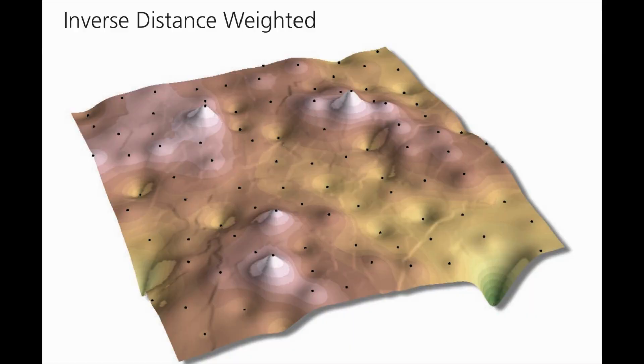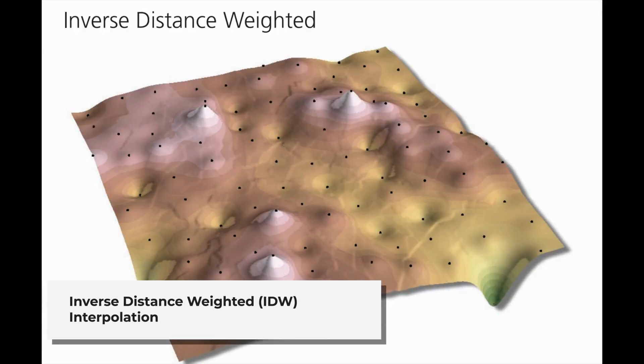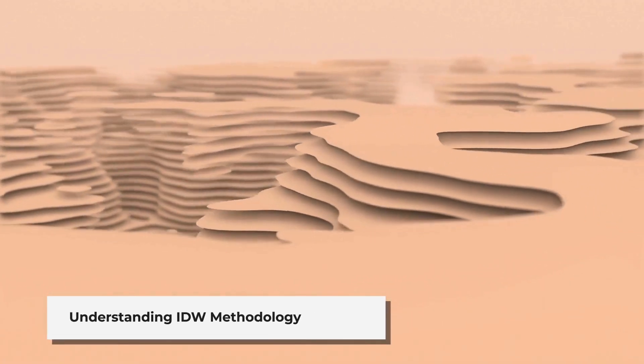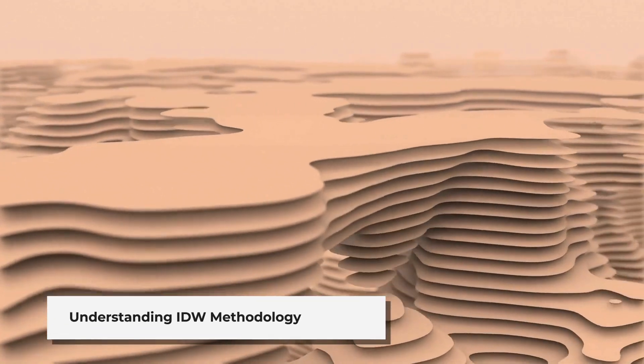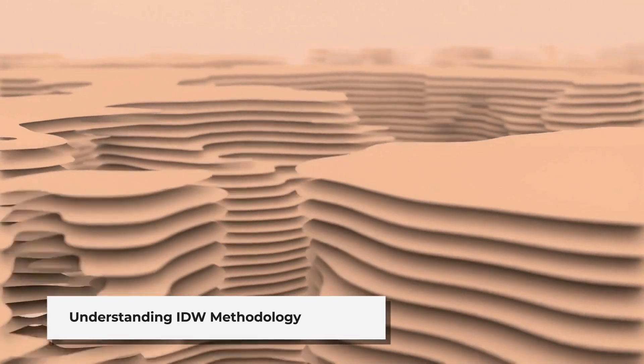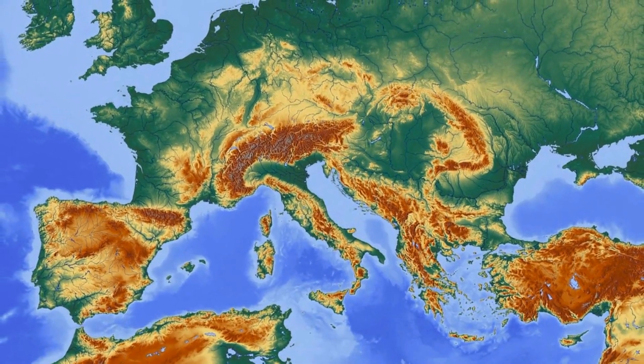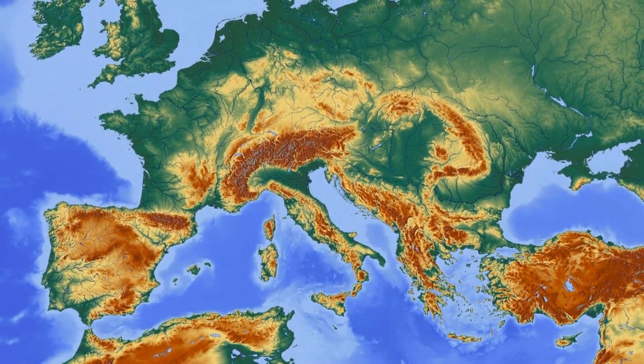First, inverse distance weighted, or IDW. With IDW, we assume that points closer to each other are more similar than those farther away. Think of it as a weighted average, where nearby points carry more influence than distant ones.